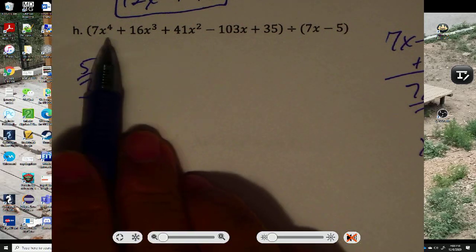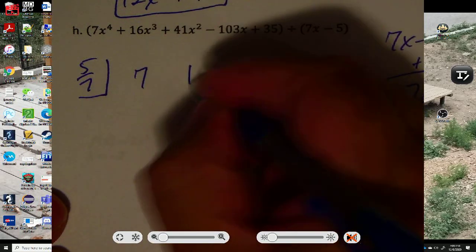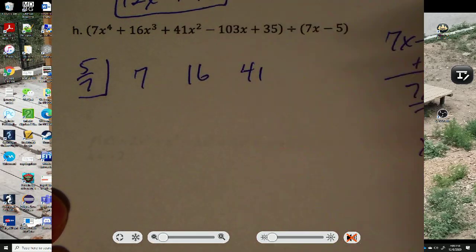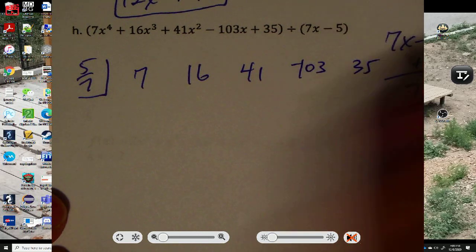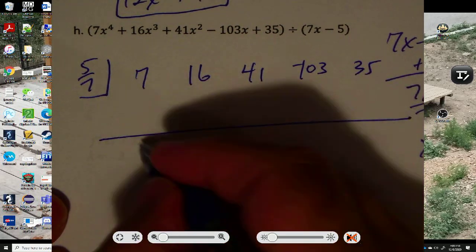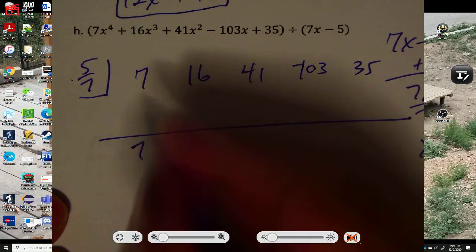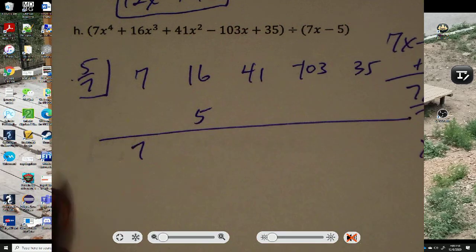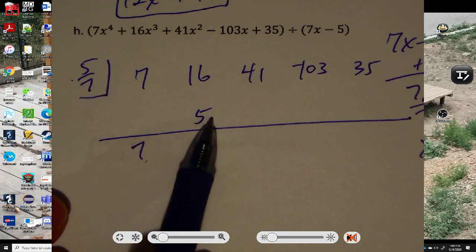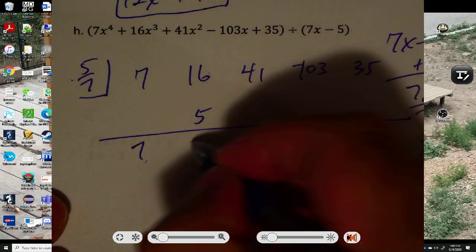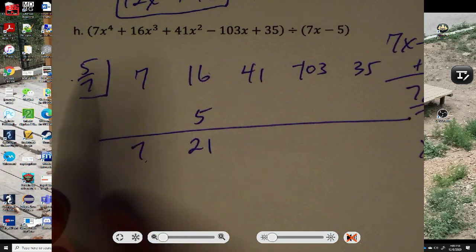Is this missing any terms? 4, 3, 2, 1, none. So no. I'm going to put it in all of them. I don't need any zeros this time. Bring it down to 7. 5 7ths times 7 is 5. It's 7 divided by 7 is 1. 1 times 5 is 5. Add. That's 21. 21 divided by 7 is 3. 3 times 5 is 15.